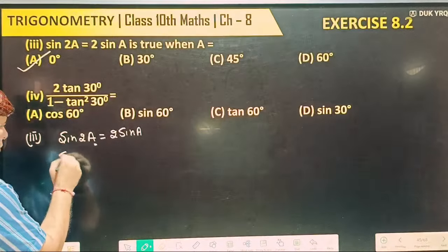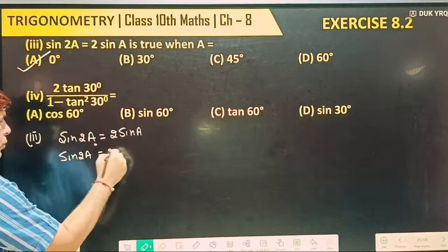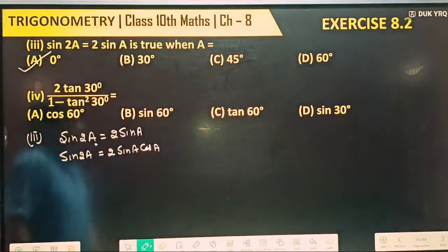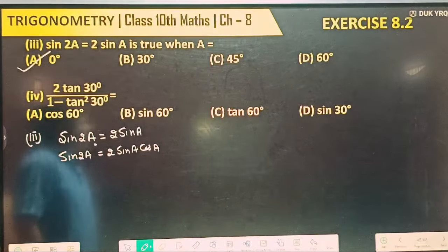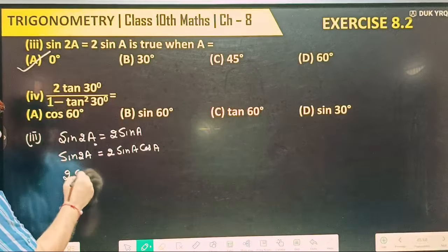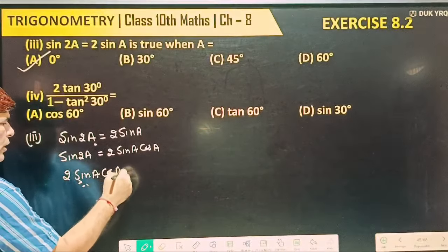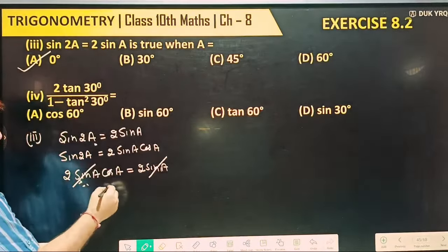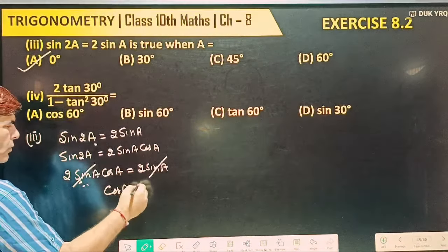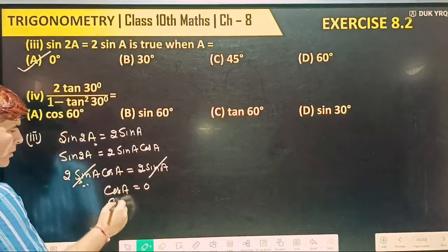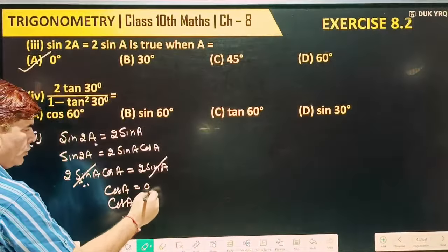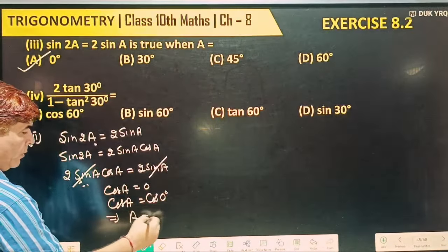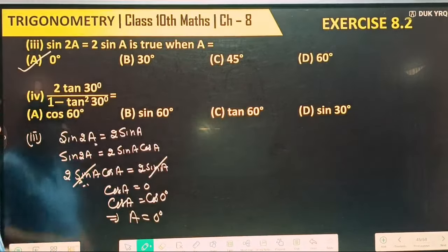Otherwise, we know sine 2a equals 2 sin a cos a. So 2 sin a cos a equals 2 sin a. Cancelling 2 sin a from both sides gives cos a equals 1, which implies a equals 0 degree. Both methods are applicable.